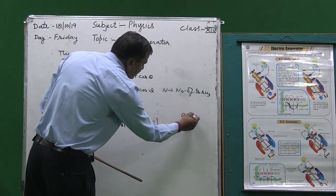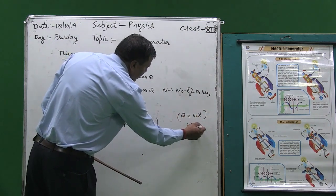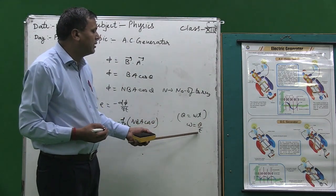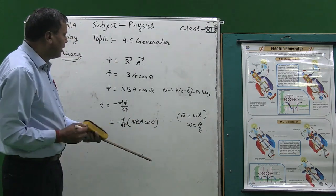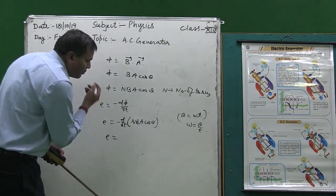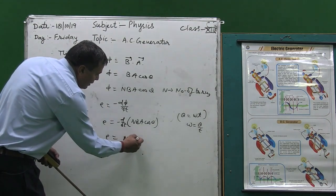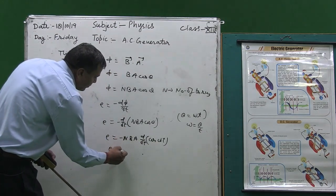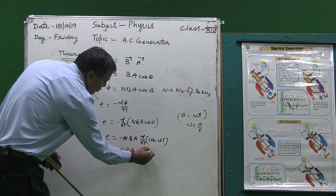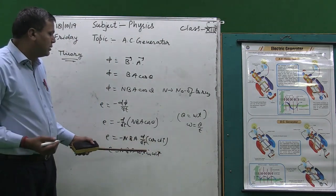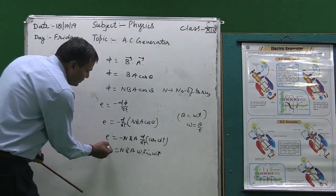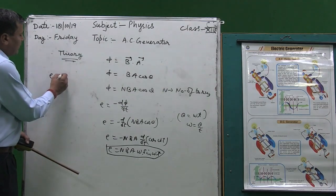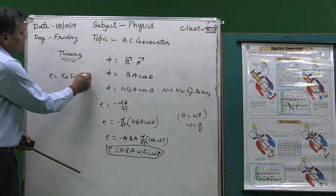Here theta is given by omega t, because omega equals theta upon t, where omega is the angular velocity of the rectangular coil, theta is the angle, and t is the time. So theta can be written as omega t. Differentiating, we get N B A d/dt of cos(omega t), which gives N B A omega sine(omega t). The differentiation of cos(omega t) is minus sine(omega t), so minus and minus cancel, and we get the induced EMF equal to N B A omega sine(omega t). This can be written as E₀ sine(omega t), which is the form of the AC voltage.